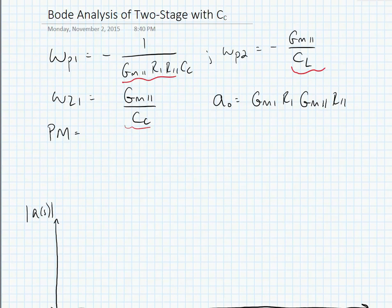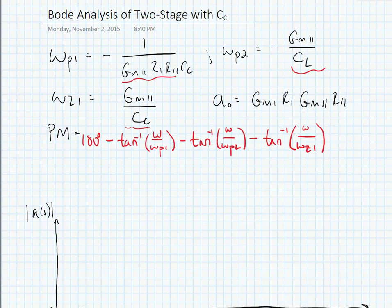We note that all three of these factors—the two left half plane poles and the one right half plane zero—cause negative phase shifts. We can write out a generalized expression for the phase margin: PM equals 180 degrees minus tan inverse of omega over omega p1 minus tan inverse of omega over omega p2 minus tan inverse of omega over omega z1.